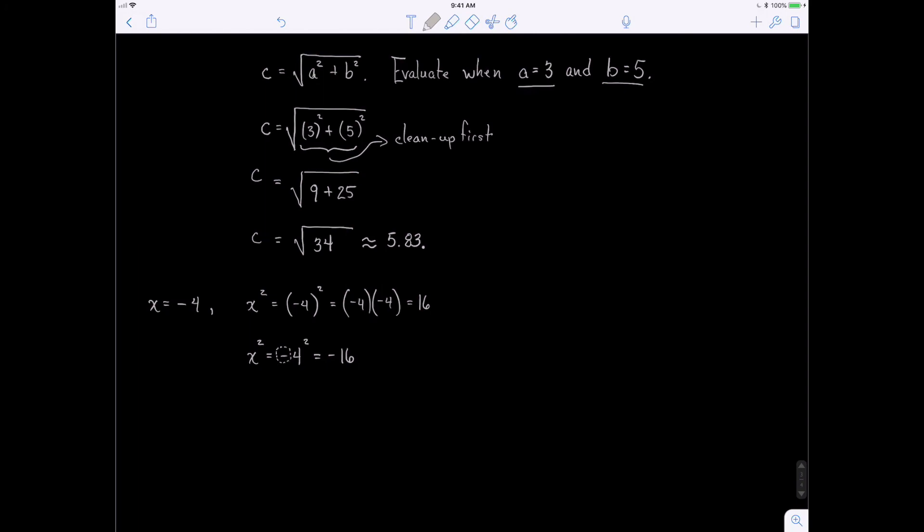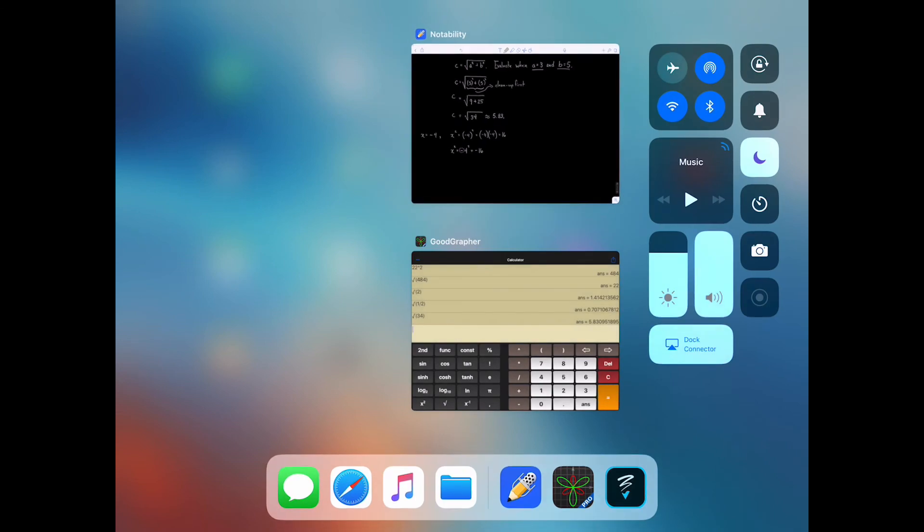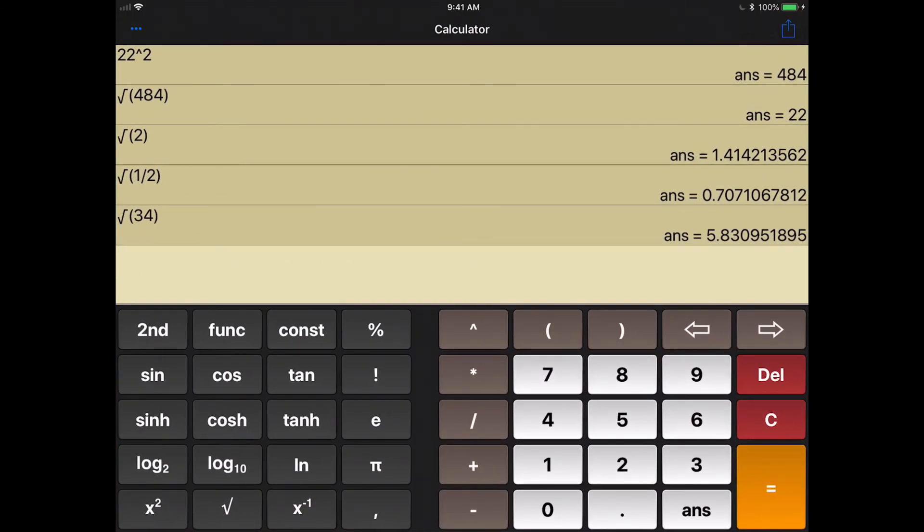So the parentheses are very important when you're dealing with substitution, especially the substitution of negative numbers. And if you don't believe this, watch. Let's go back to our good grapher. In parentheses, let's take negative 4 and we'll square it, and we get 16 like we thought. Now let's try this. Let's take a negative 4 and we'll square it, and let's see what we get. See, we get negative 16. So even good grapher knows the difference between whether you use parentheses or not.